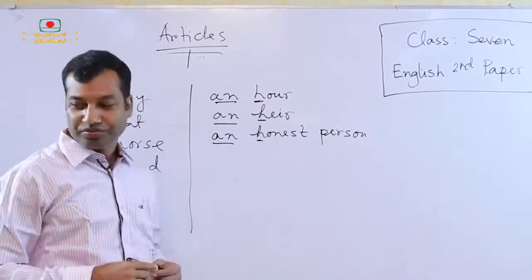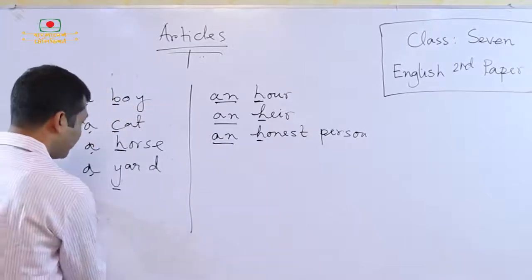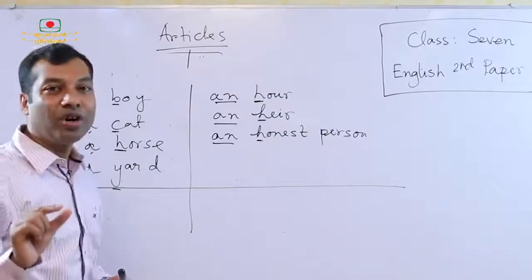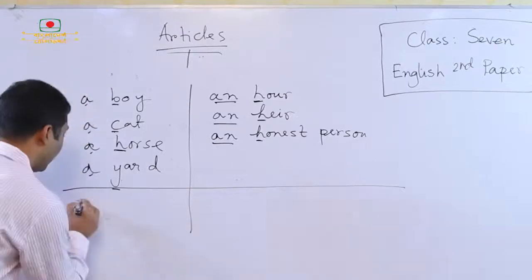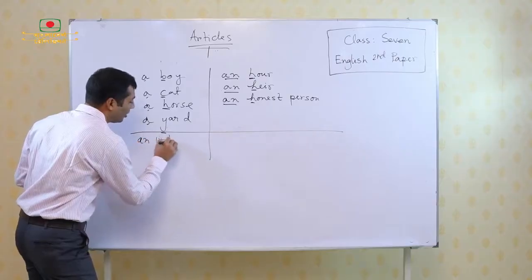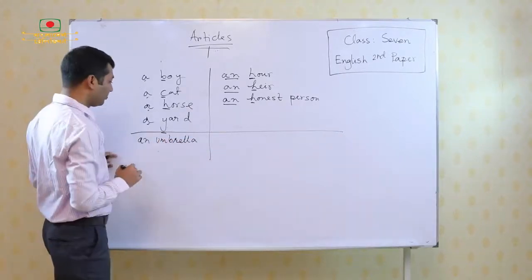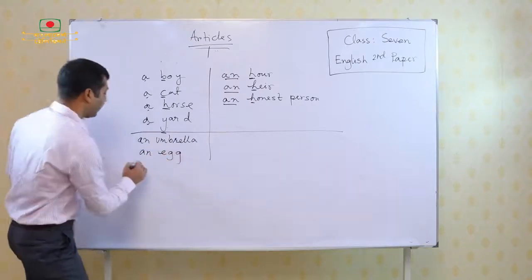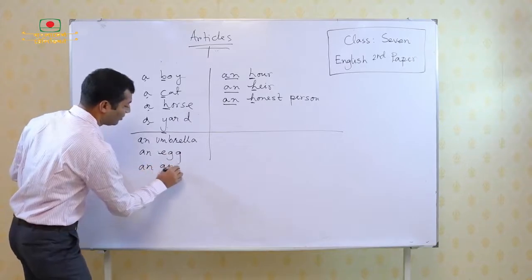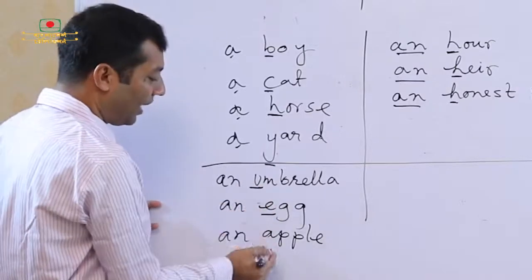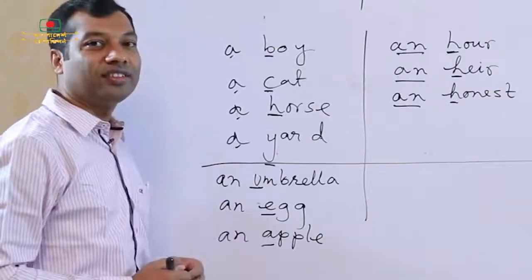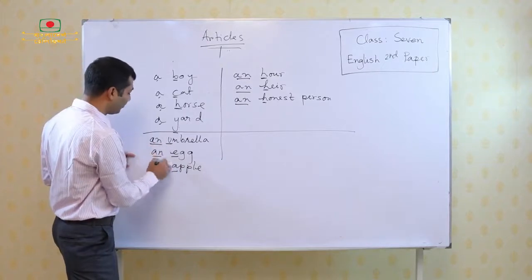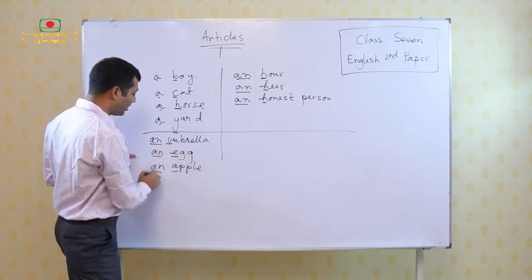Now come to the next point. At the very beginning, what I said is that we use AN before a vowel sound. For example: an umbrella, an egg, an apple. Look at these words — umbrella, egg, apple. The initial sound is a vowel sound. So as they are vowels, we are using AN before them: an umbrella, an egg, an apple.